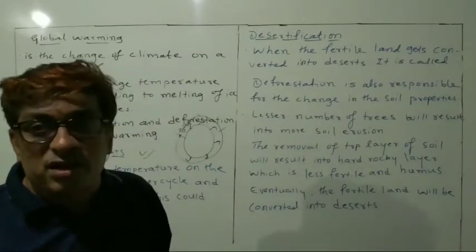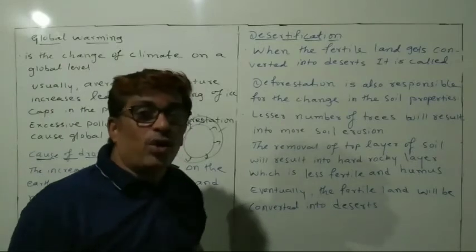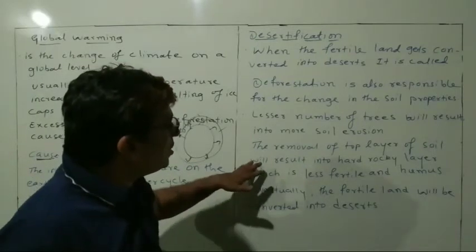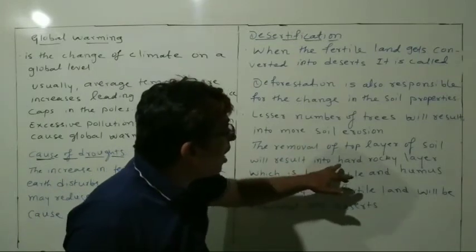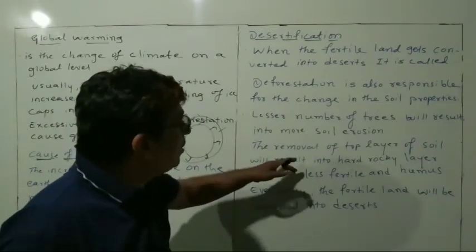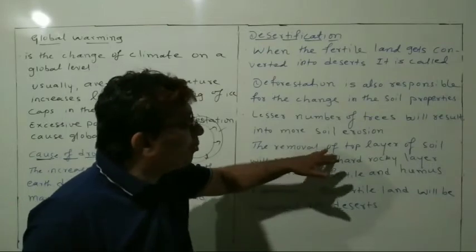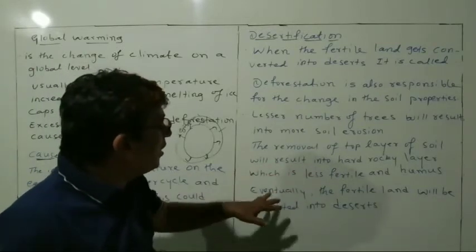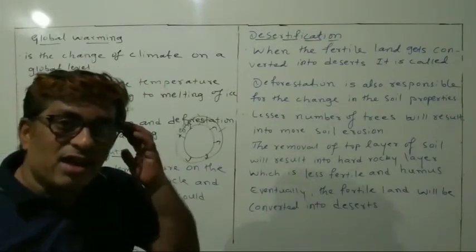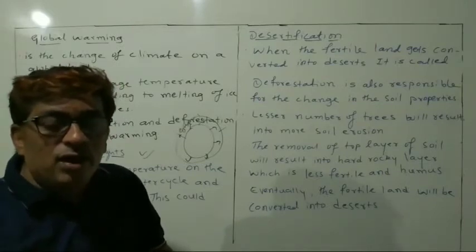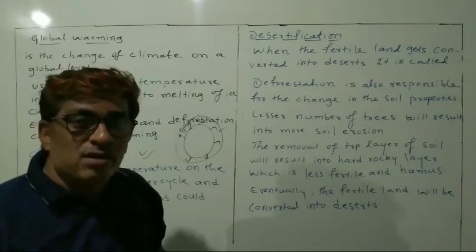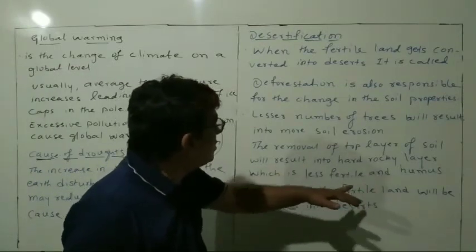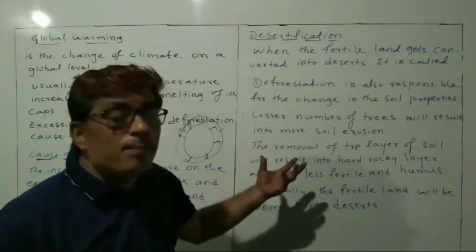Soil erosion means the removal of the top layer of soil. The removal of the topsoil results in hard, rocky layers being exposed, which are less fertile. Humus — the decayed bodies of plants — makes the soil good. Due to less fertility and humus, the soil texture changes because of deforestation.